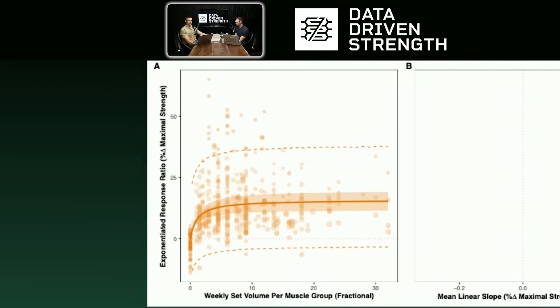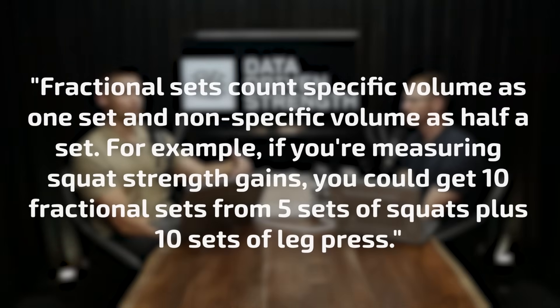So on the left-hand side, which is identified as panel A, on the x-axis you have increasing fractional set volume. So just as a basic example, at 10 sets, if you see a data point, that means that the condition had 10 fractional sets. So you could have various ways of getting to 10 fractional sets. You could have all direct training, so it could be just 10 sets of what was ultimately measured in the strength assessment. Or you could have five direct sets and 10 indirect sets of accessory type movements.